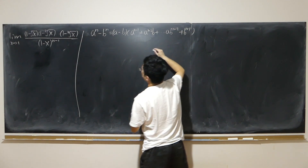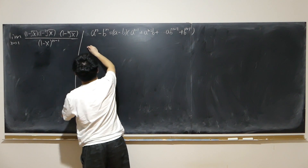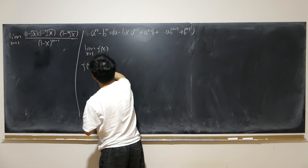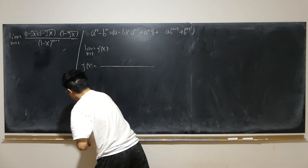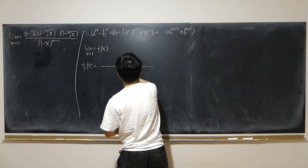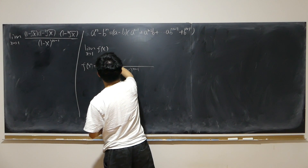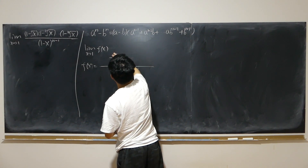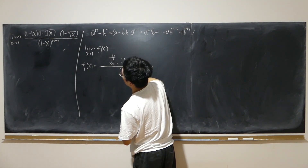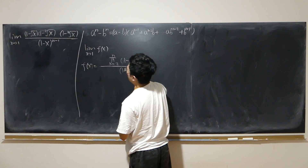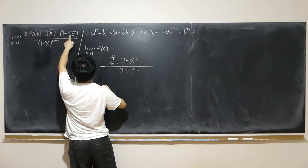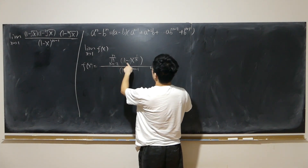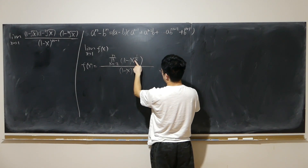Using this formula, I'm going to rewrite this limit. As x approaches 1, this is my f of x. I'm going to rewrite the top as a finite product: k goes from 2 all the way up to n of 1 minus x to the power of 1 over k. So cubic root means just 1 over 3, up to 1 over n in general. I'm going to treat 1 as a.